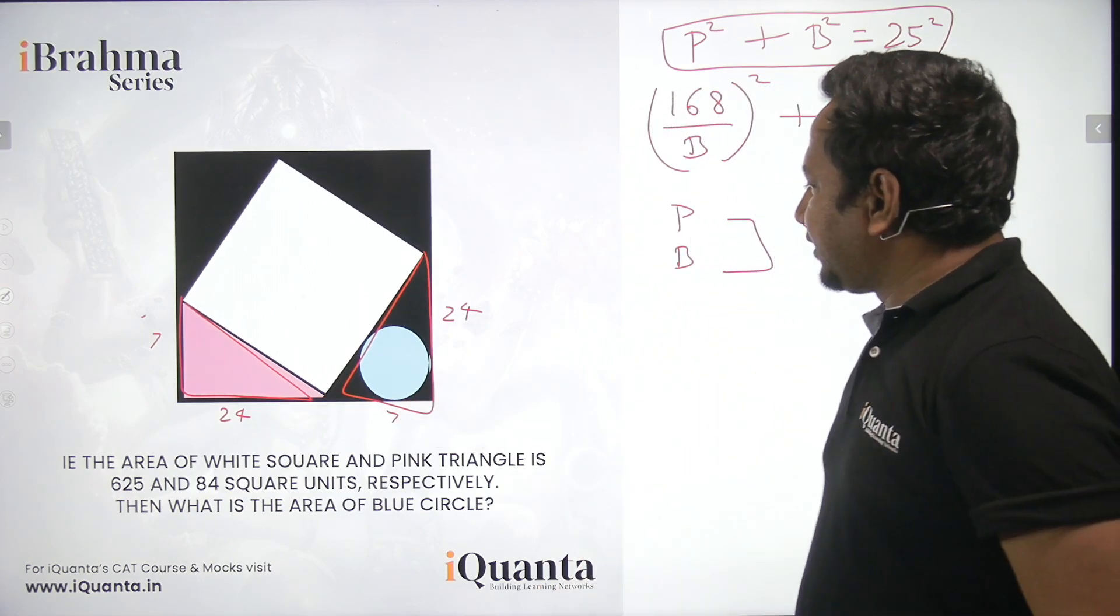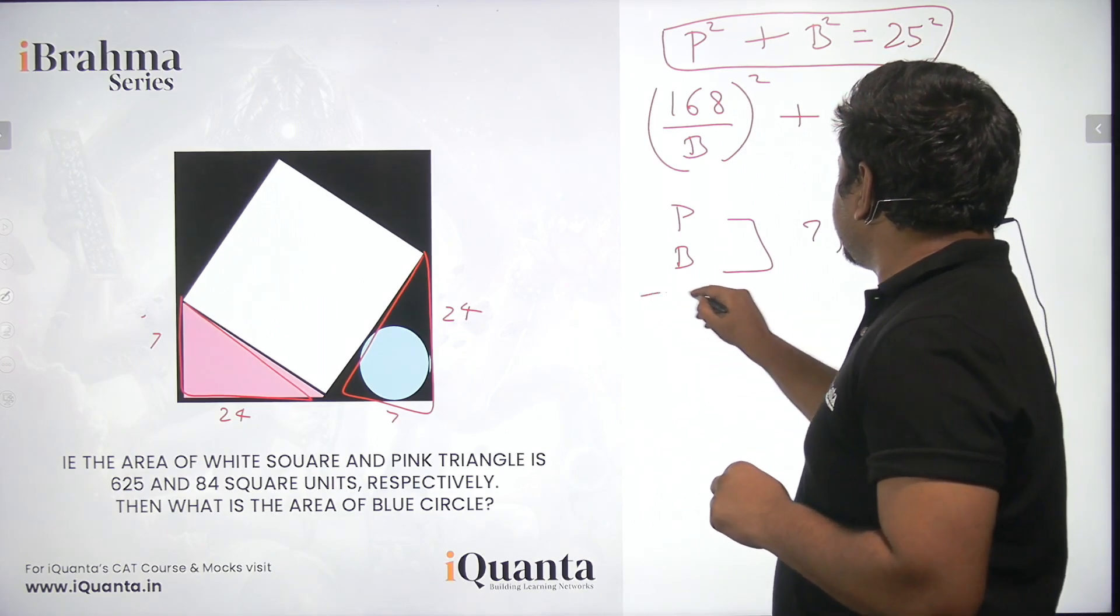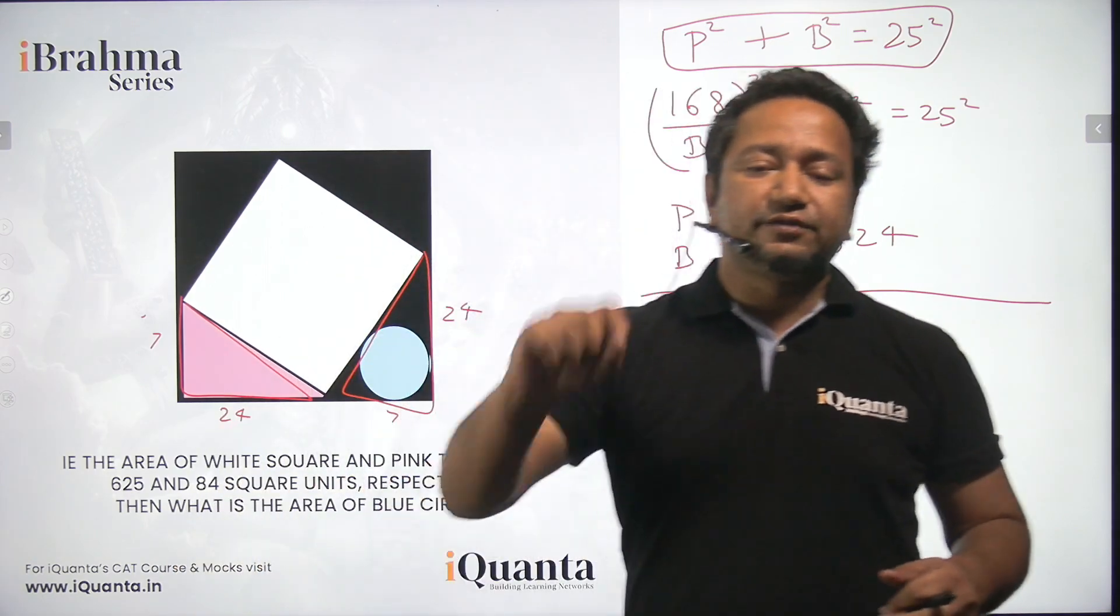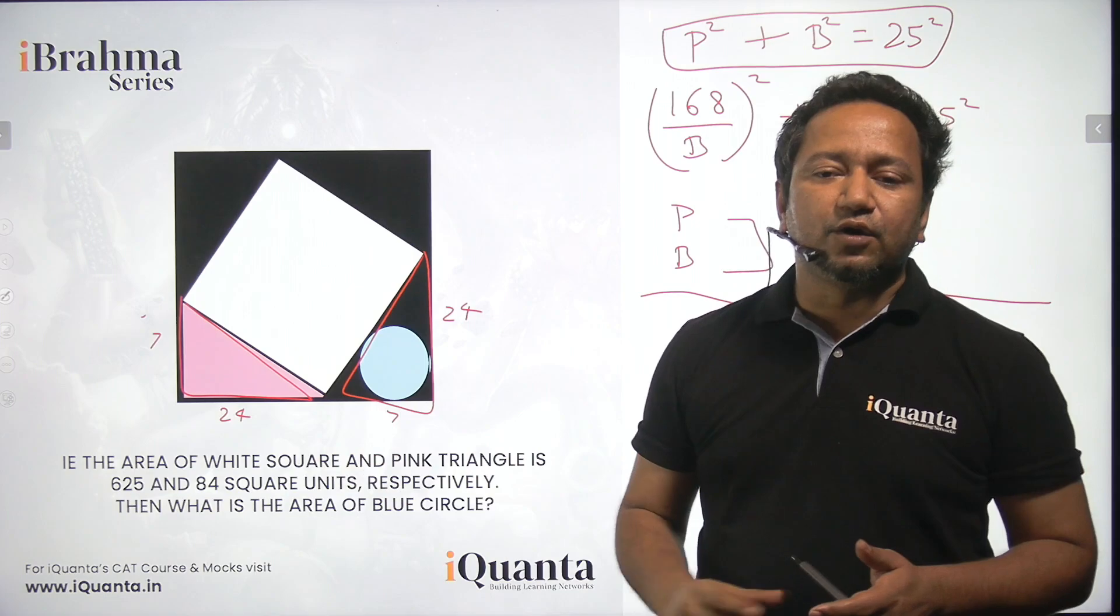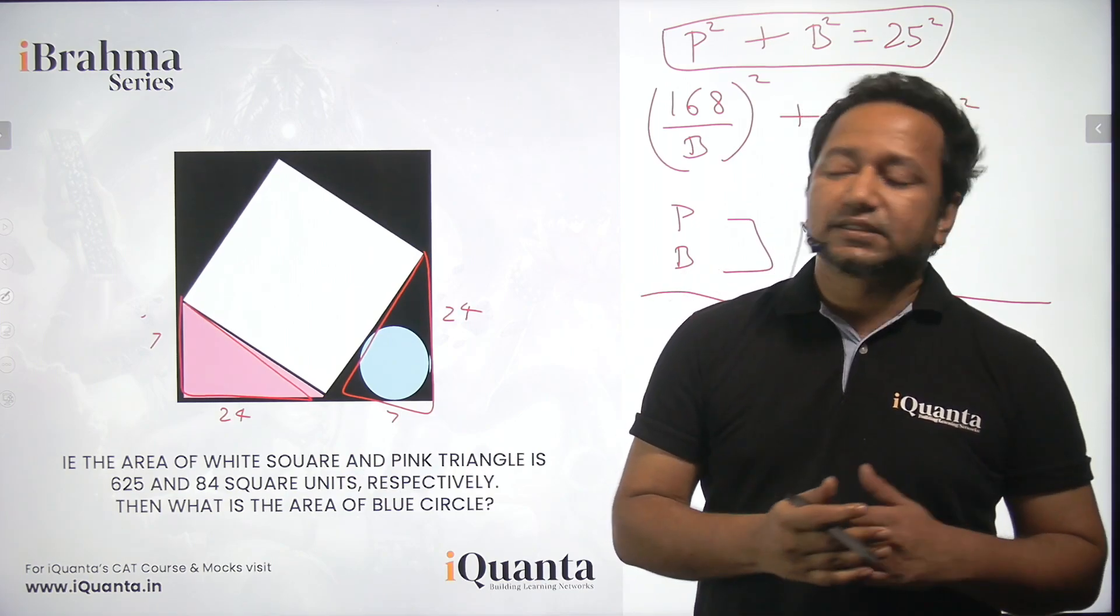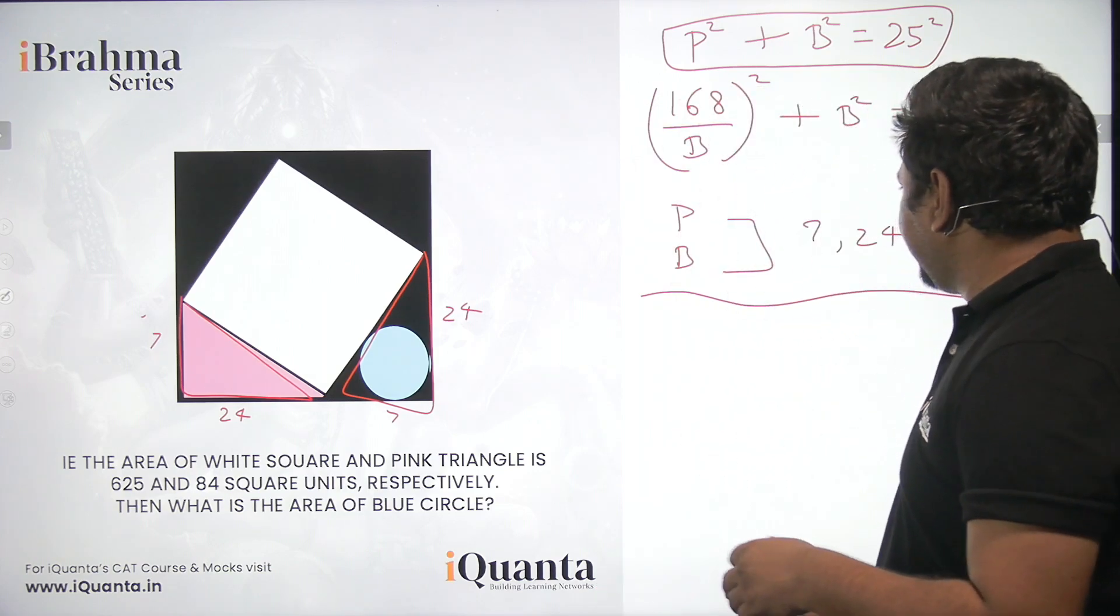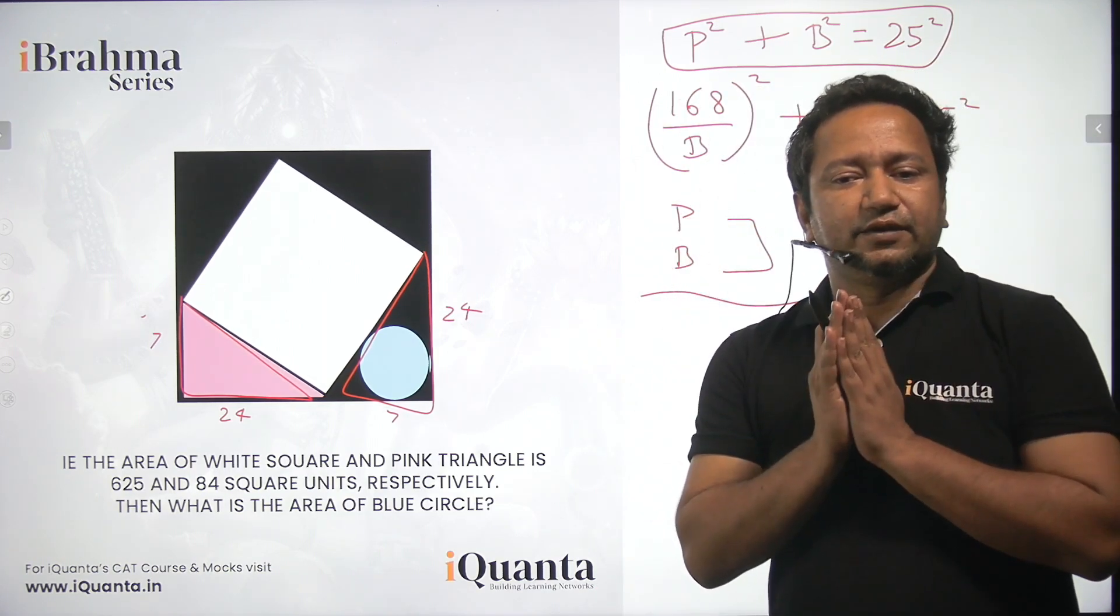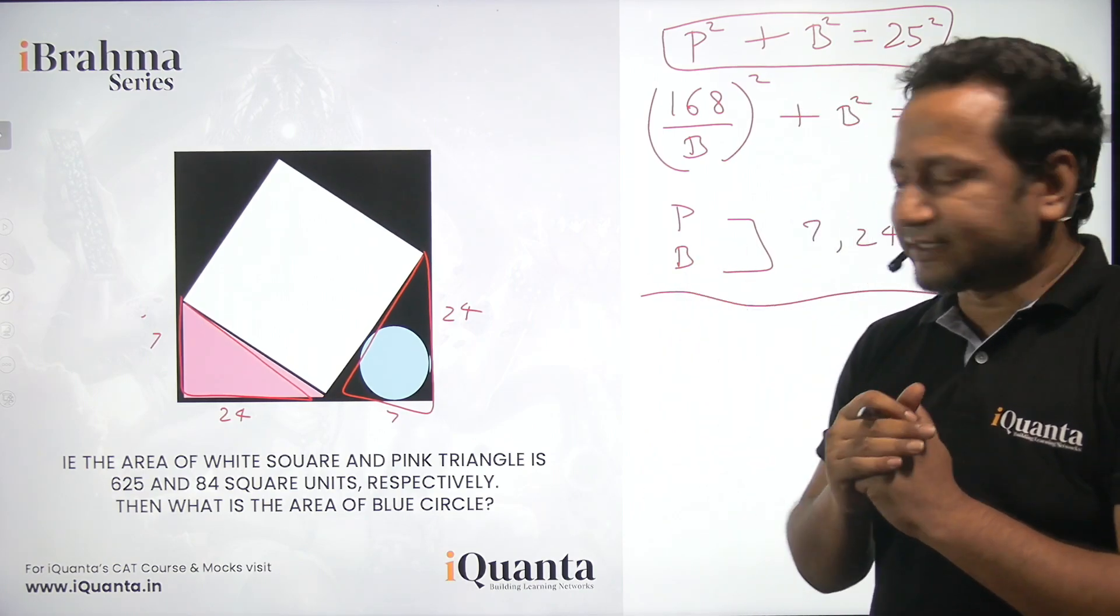Now we have to find the radius of the blue circle. This is one way of solving it, which will take a lot of time. But if you remember, you should refer to the Brahma triplets class, which I took a few days ago, and in that class, I have given a theorem. And through that theorem, you will be able to find the value of P and B just by looking at the value of hypotenuse. So you can refer there. I'll just provide a link in this class.